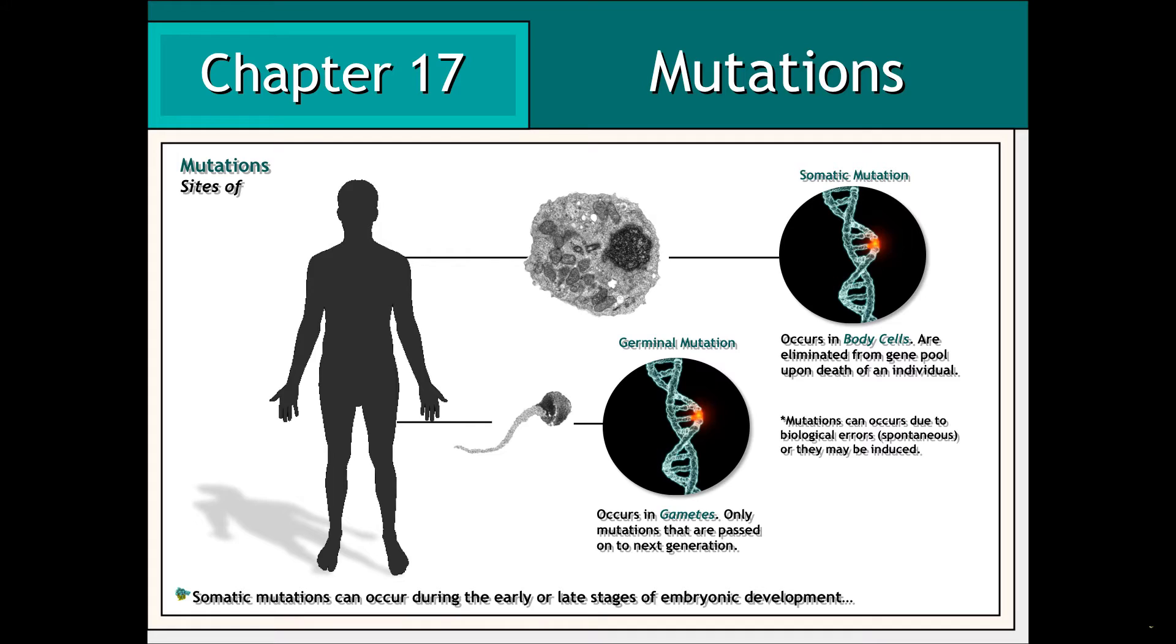Cells of the animal body consist of two types, somatic and germ cells. Thus, the mutations that occur in these cell types include somatic mutations and germline mutations.